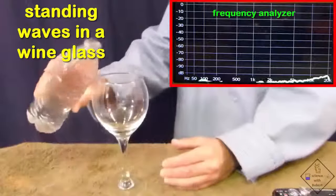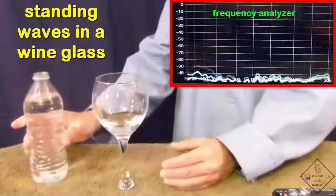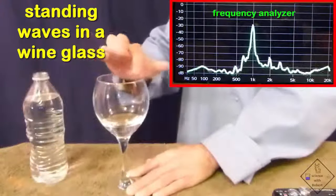You can easily change the natural frequency of a wine glass by adding water. The addition of water changes the mass of the glass, and with more water a lower natural frequency resides in the glass.